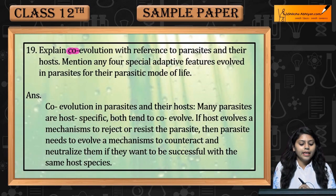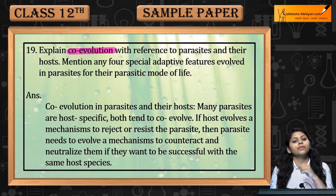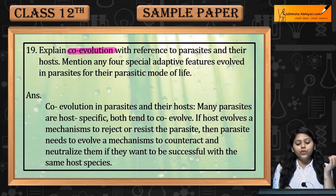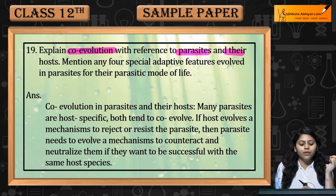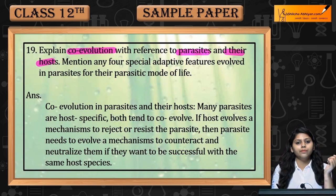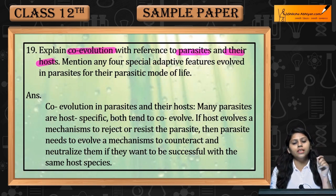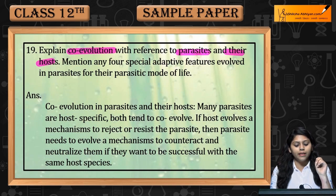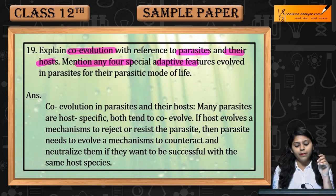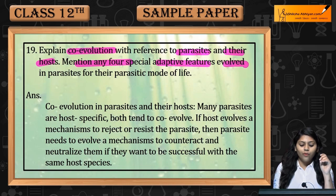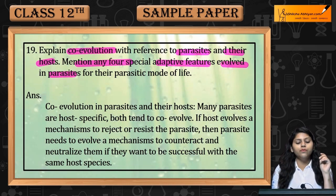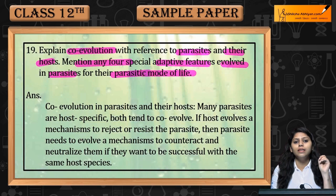Question 19: Explain co-evolution with reference to parasites and their hosts. Also mention any 4 special adaptive features that evolve in parasites for their parasitic mode of life.